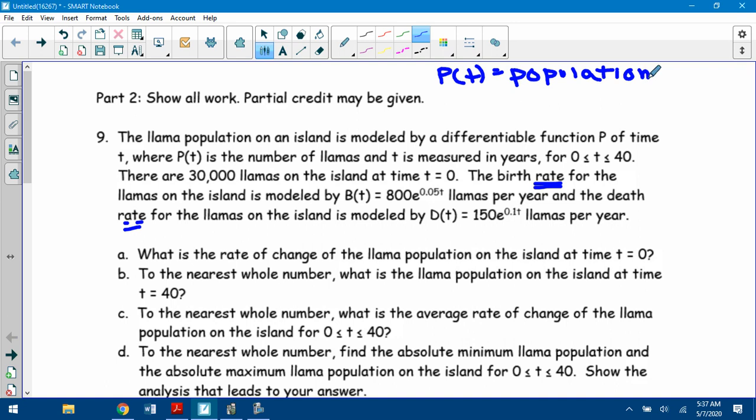So that means the rate of change of the population is the rate in minus the rate out. P prime of t is equal to B(t) minus D(t). That's P prime, that's not P.